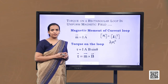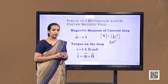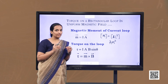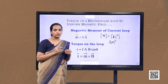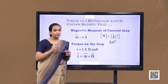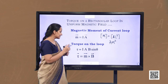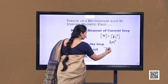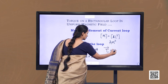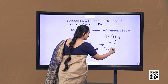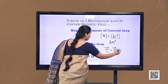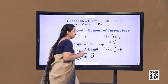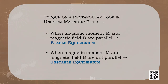This expression is analogous to the electrostatic case, where the torque on an electric dipole placed in an electric field is given by τ = p × E, the cross product of the electric dipole moment and the electric field.